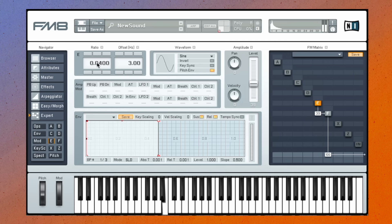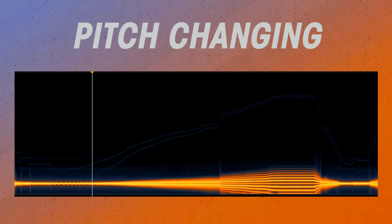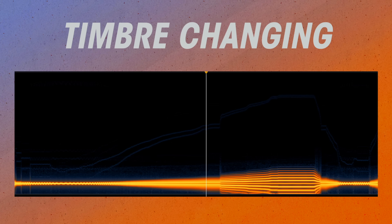He then became curious about what would happen if he increased the rate of the slower sub-audio rate sine wave into the audio range. When the slower wave reaches audio rate, we no longer hear the pitch of the faster wave changing — we hear its timbre changing. This was an incredible discovery, especially given that computer resources were very scarce. Modulating the frequency of one sine wave with another can create a huge number of partials.